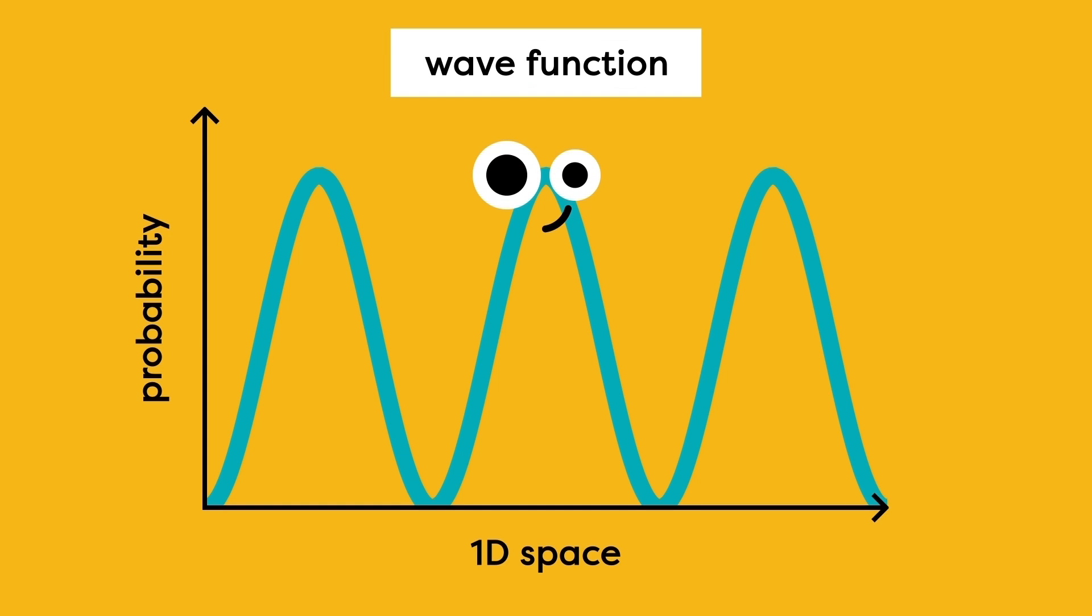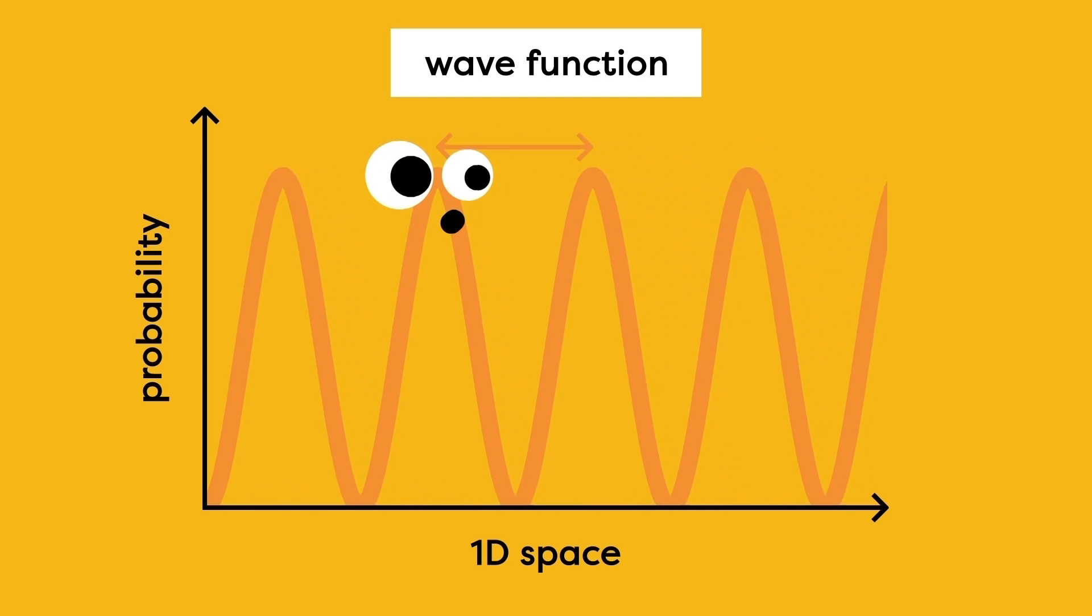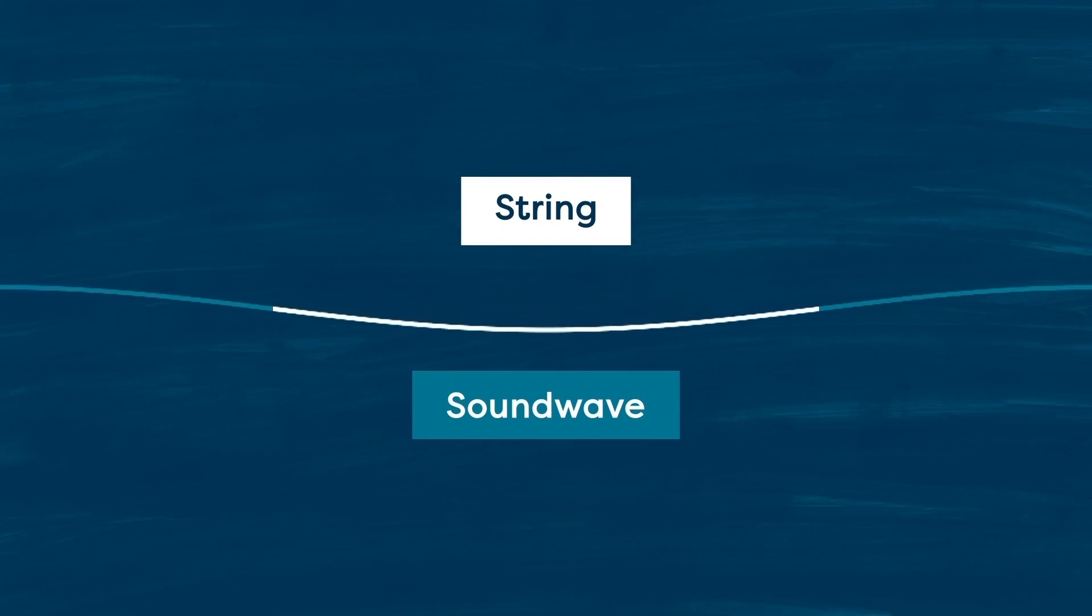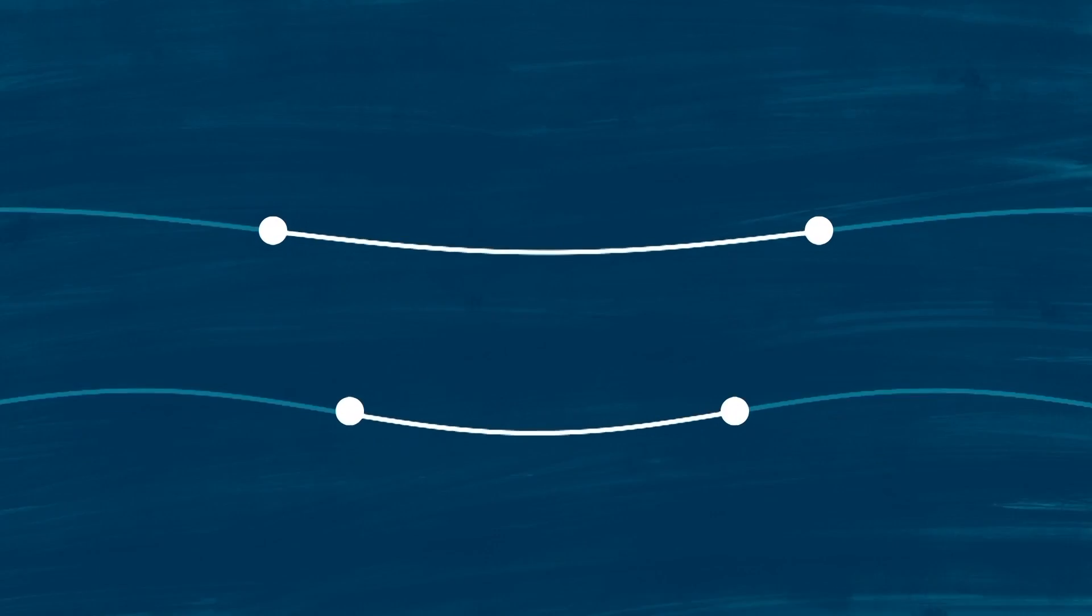Now, the thing is, only certain wavelengths can exist in a confined space. If you imagine a string on a guitar, only certain wavelengths are allowed because the ends need to be attached to the guitar. For example, this wavelength is fine, but this one doesn't work. This one is fine. This one, nope. That's why two strings of different length can't produce the same sounds.